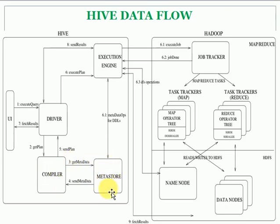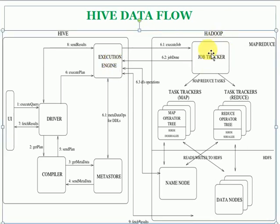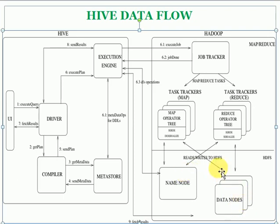The compiler needs to verify that the tables and columns you've written in queries exist in your metadata or not, so it requests the metastore to verify all tables and columns are available in your database. The metastore sends the table and column information back to the compiler. The compiler sends the plan to the driver; the driver executes the execution plan and sends it to the execution engine. The execution engine sends the request to Hadoop through Tez and the job tracker, tracking all jobs. The mapper and reducer task trackers read data from data nodes, and the name node verifies that all files are available.